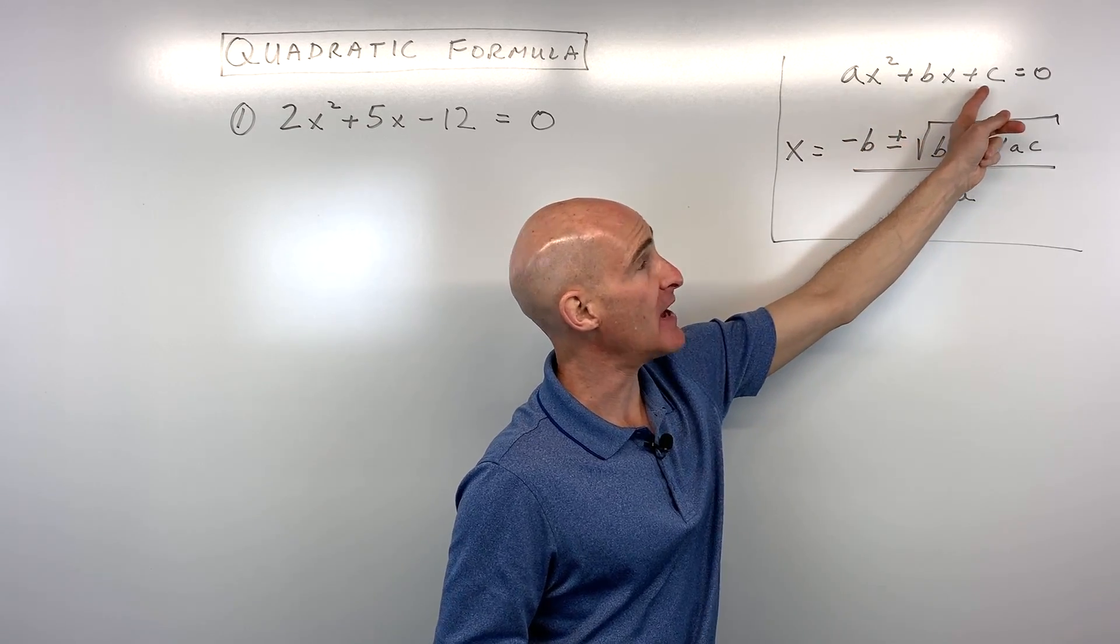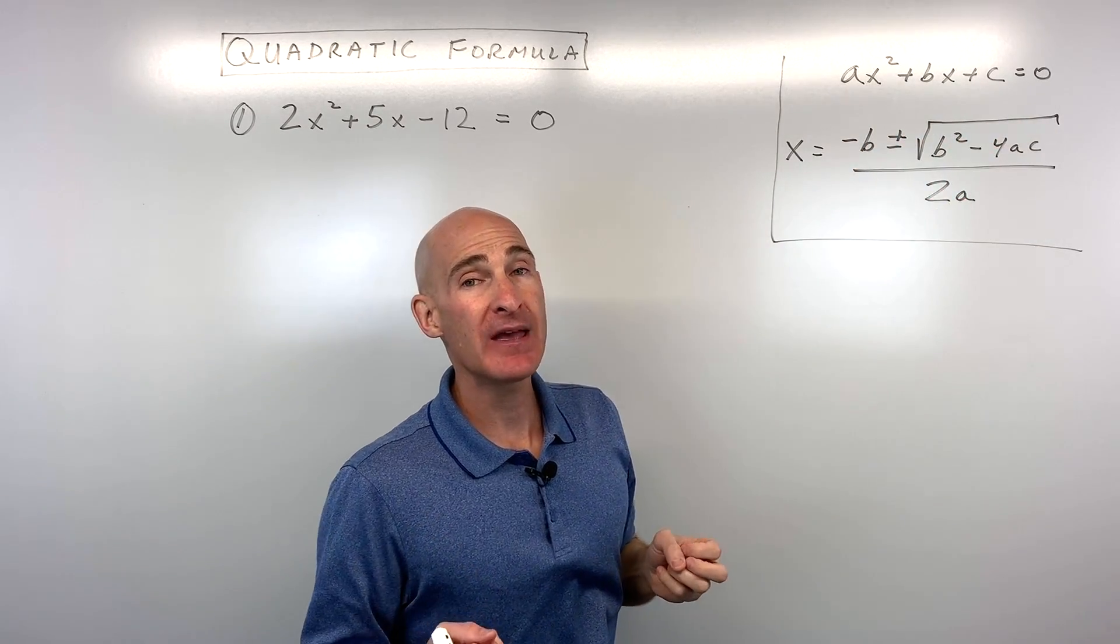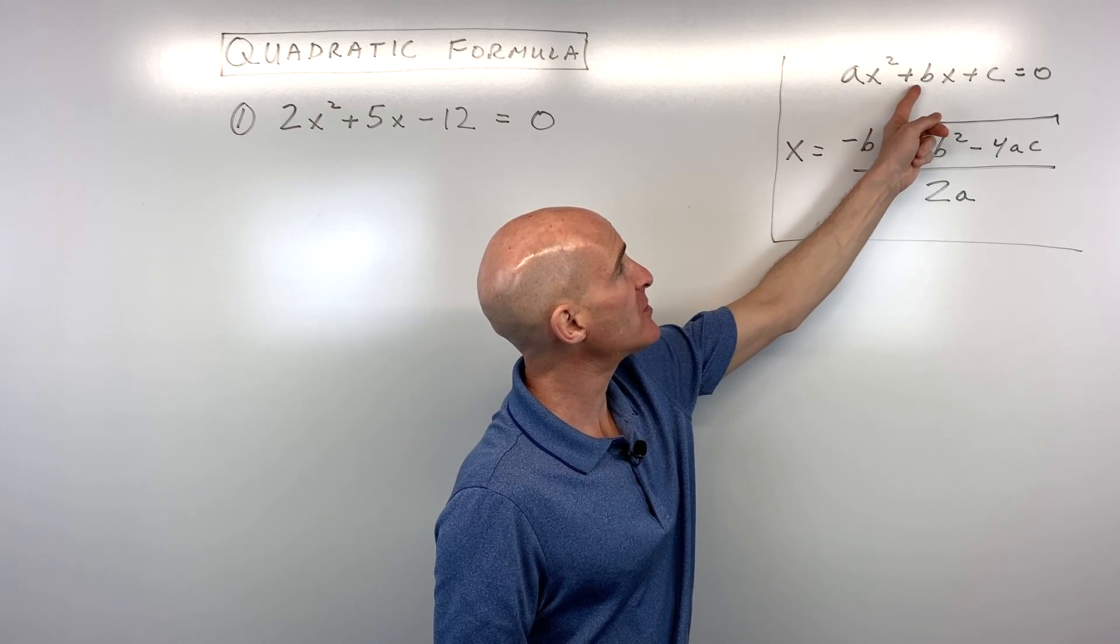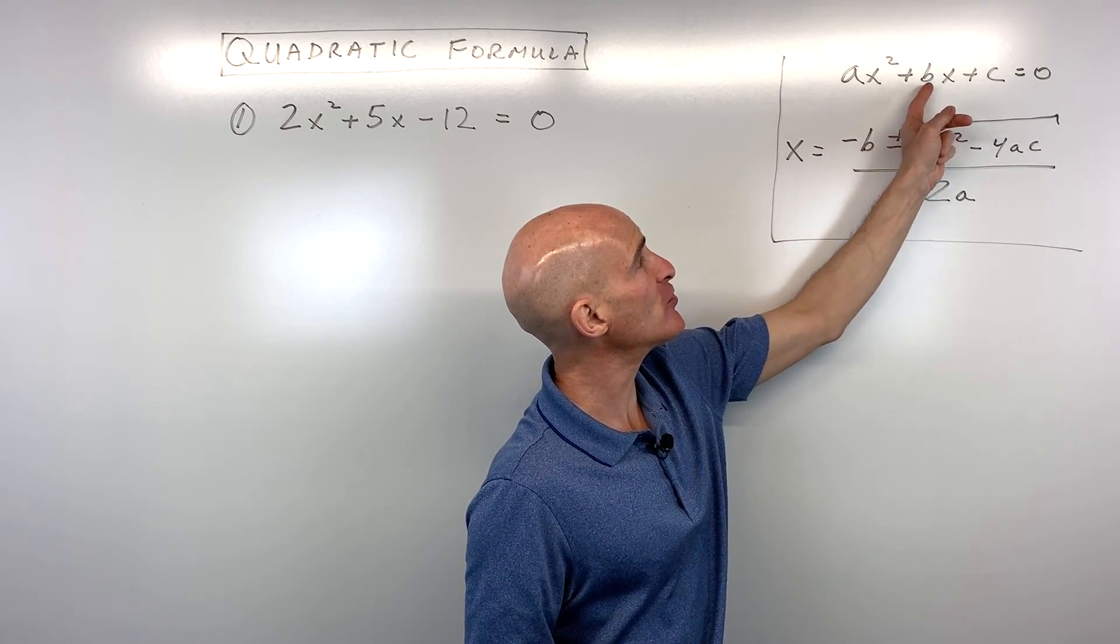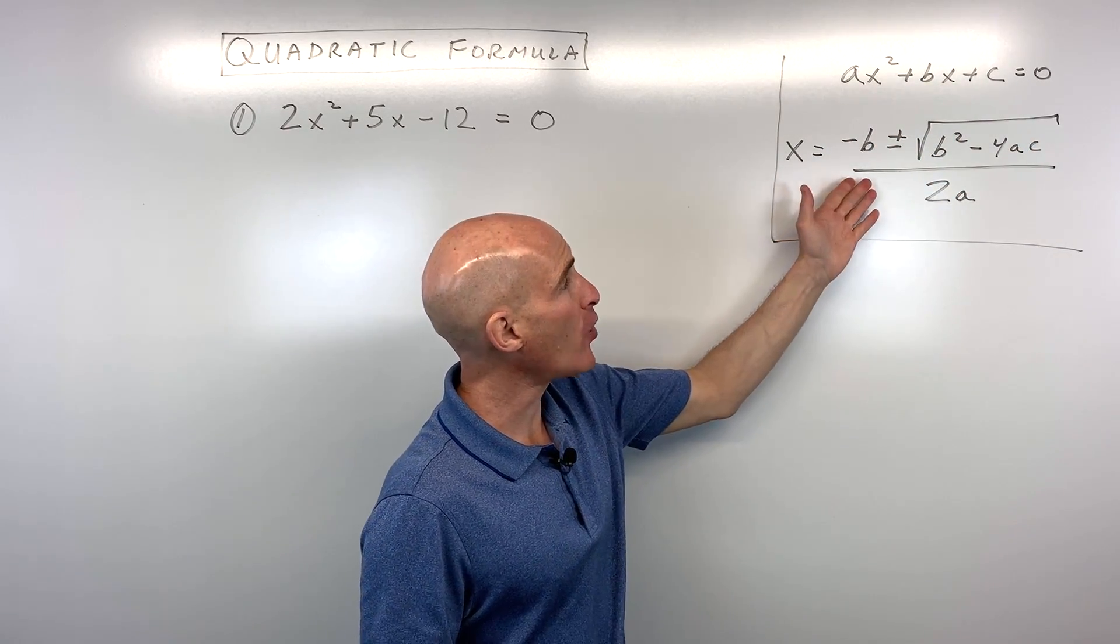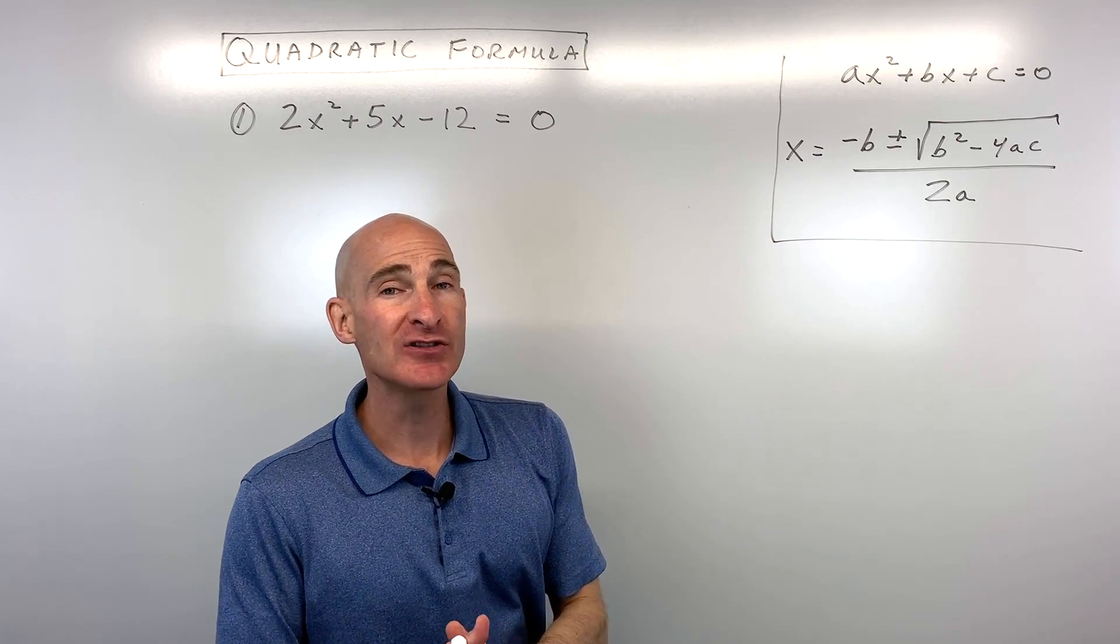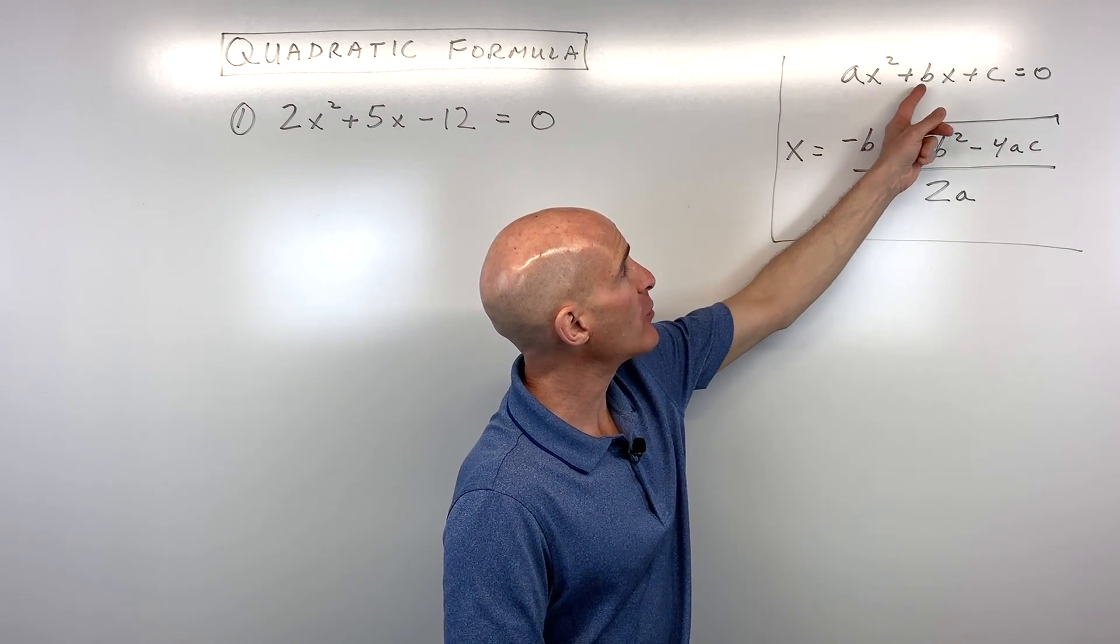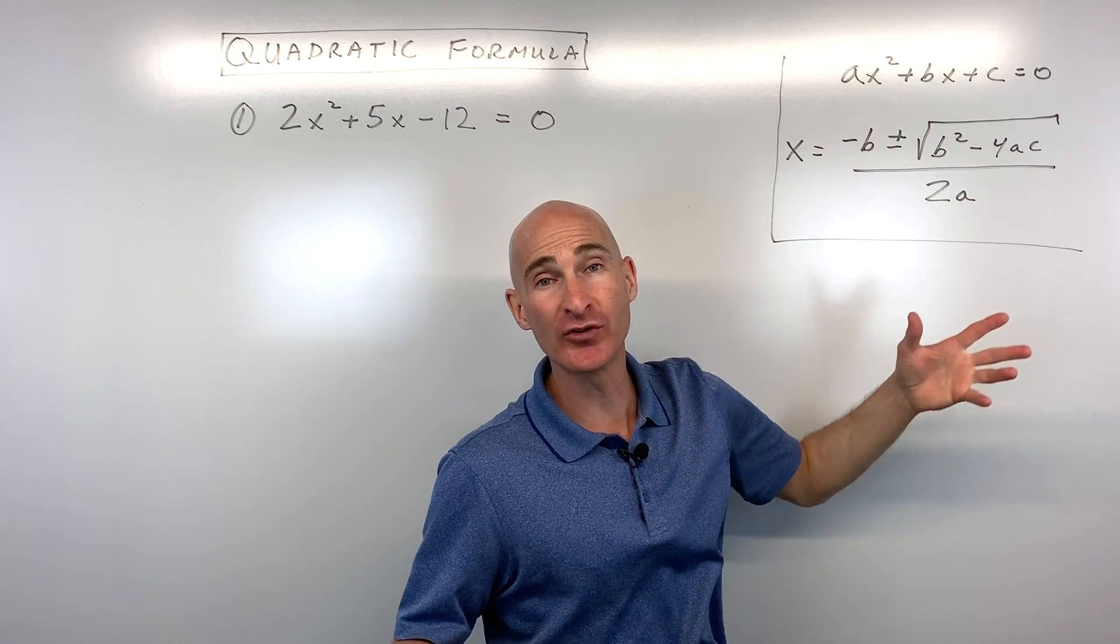It's in that standard form, ax squared plus bx plus c. Now, what you want to pay attention to are these coefficients, these numbers that come in front of the variables, the a, b, and c, because that's what we're going to use in our quadratic formula. And what it allows us to do is it allows us to find out what value of x makes this equation equal to zero.